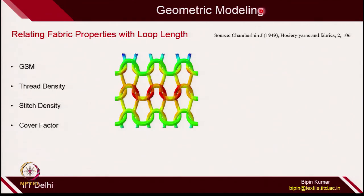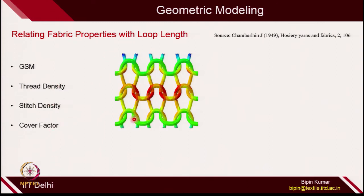For doing the geometrical modeling, we need one parameter which is the loop length. We can connect properties like GSM, thread density, stitch density, and cover factor. The first scientist who thought to model these fabric properties with loop length was Chamberlain — it's almost 60 to 70 years old model. He found that once you know the loop length of the fabric, many of the properties can be derived. He proposed some equations relating GSM with loop length and other variables with the loop length.